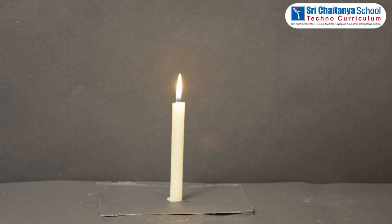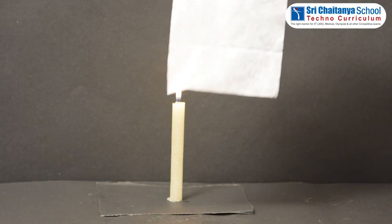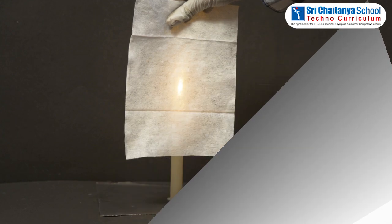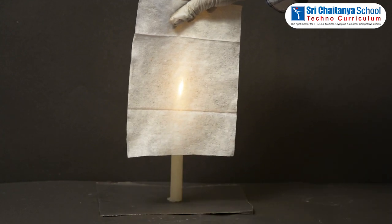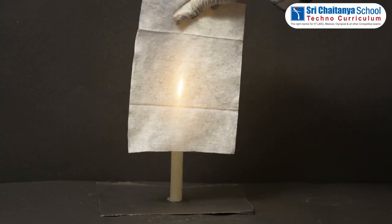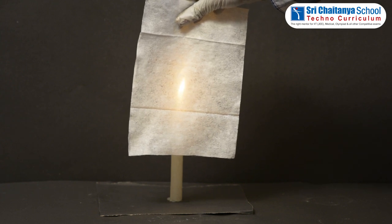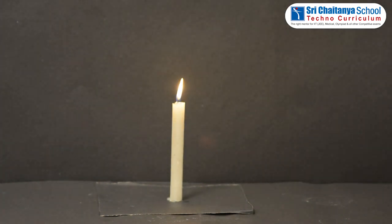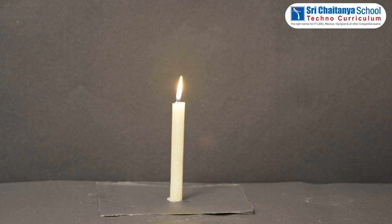Now, observe by using a tissue paper. Can you see the lighted candle now? Yes, we can see, but it is not clearly. Means, what we can say here? The tissue paper is a translucent substance.